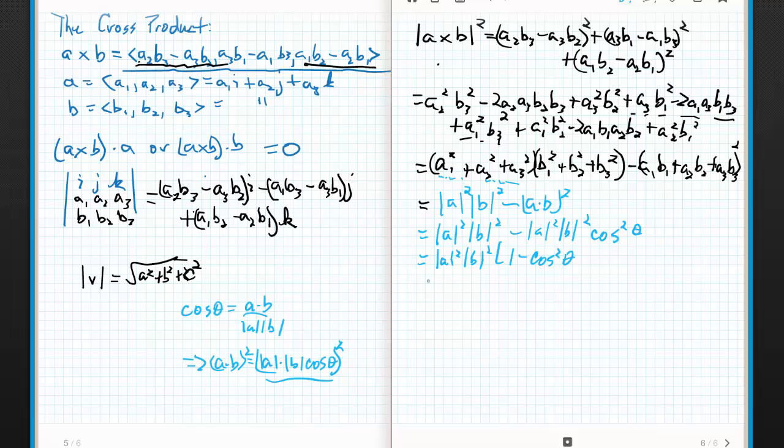Now, what's begging to happen? Well, let's factor out a magnitude of a squared magnitude of b squared and I get times 1 minus cos squared theta. And then, what do we know about 1 minus cos squared? It's sine squared. So, I have magnitude of a squared magnitude of b squared sine squared theta.